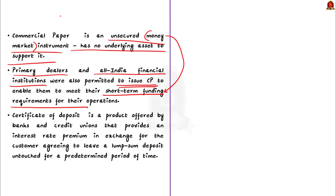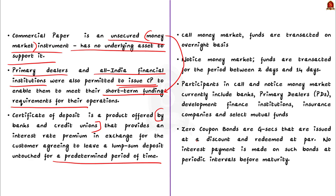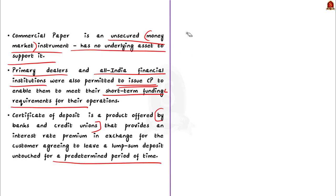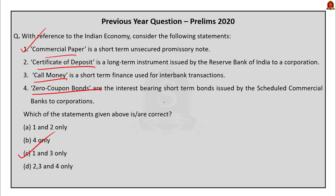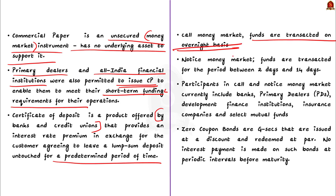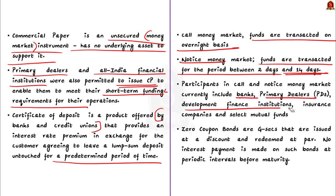A certificate of deposit is a product offered by banks and credit unions that provides an interest rate premium in exchange for the customer agreeing to leave a lump sum deposit untouched for a predetermined period. So statement two is wrong. Statement three correctly defines call money — under the call money market, funds are transacted on an overnight basis, while in the notice money market funds are transacted for two to fourteen days. Participants include banks, primary dealers, development financial institutions, insurance companies, and some mutual fund agencies. Statement three is right.